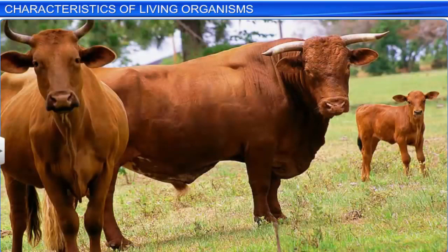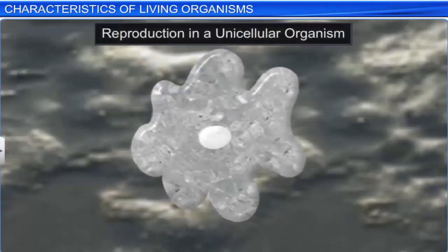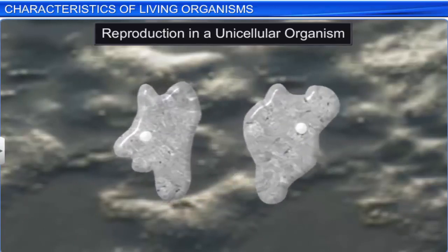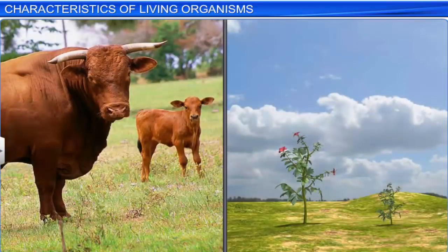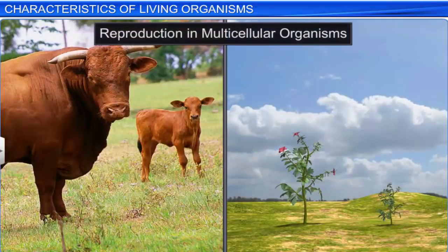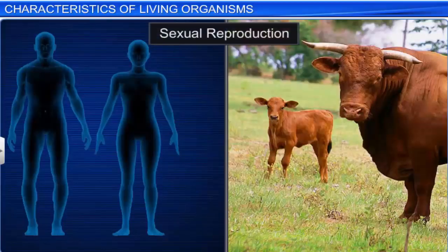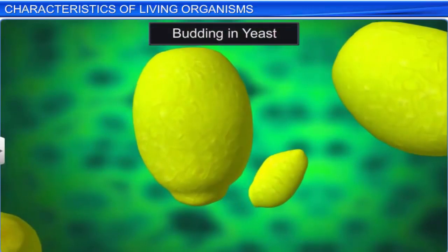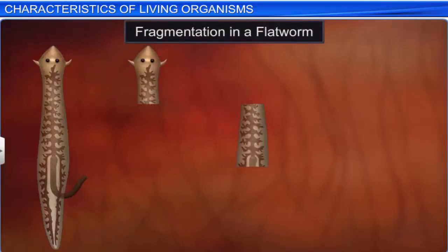Reproduction is another important characteristic of living organisms. In unicellular organisms, reproduction and growth are synonymous, as both lead to an increase in the number of cells. This is not the case with multicellular organisms, where reproduction leads to the creation of an offspring. These organisms reproduce either sexually or asexually. Sexual reproduction can be seen in higher organisms like man and animals. Asexual reproduction can be seen in lower organisms through budding, as seen in yeast, or through fragmentation, as observed in flat worm.